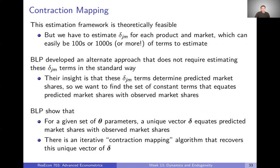In theory, everything we just described is feasible: we estimate our deltas and thetas, take those deltas, use them to estimate beta-bars, and we've got all the parameters of our model. The problem, though, is that we could have hundreds or thousands of delta terms to estimate, and that might be computationally infeasible. So really the novelty of BLP is that they developed an alternate approach where they don't have to estimate those delta terms in the way I just described — as product-market intercept terms in a mixed logit model.